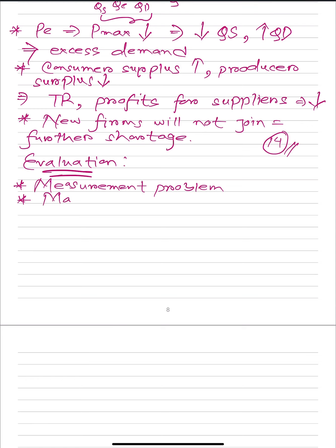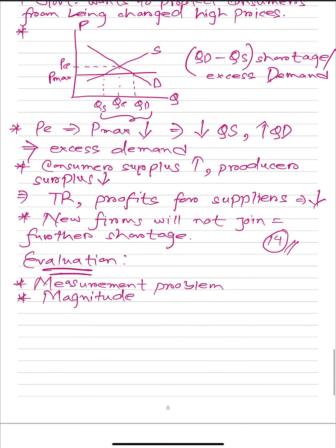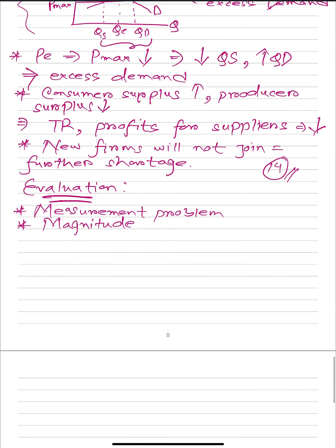Another evaluation point is the magnitude. All the effects written in the analysis part will depend on the magnitude of the maximum price that has been set. If the change in magnitude is lower, the effects will be lower; if the change in magnitude is very high, the effects will be high. It depends on the magnitude of change in price.